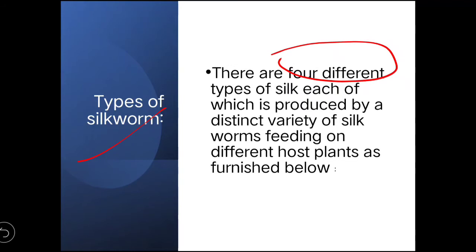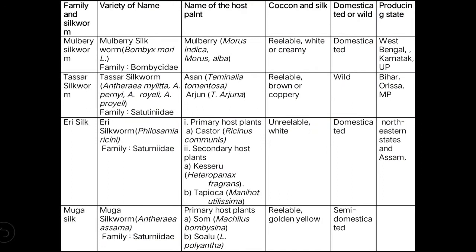There are four different types of silkworm, each produced by a distinct variety feeding on different host plants. The four varieties are: mulberry, tasar, eri, and muga silk. The scientific name of the mulberry silkworm is Bombyx mori, belonging to the family Bombycidae.